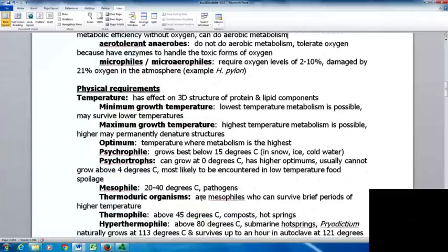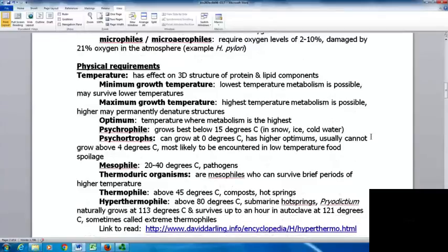Organisms have physical requirements. Temperature affects three-dimensional structure of protein and lipid components. There's a minimum growth temperature, the lowest where metabolism is possible - they may survive lower but won't be metabolically active. Maximum growth temperature is the highest metabolism is possible; higher temperatures may permanently denature structures. Optimum temperature is where metabolism is highest. Psychrophiles grow best at 15 degrees Celsius or lower, in snow, ice, and cold water.